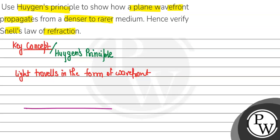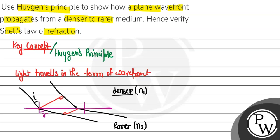Now suppose this is the line between two media. Here we have the denser medium, and this is the rarer medium. As light goes from denser to rarer, its velocity changes in the rarer medium.